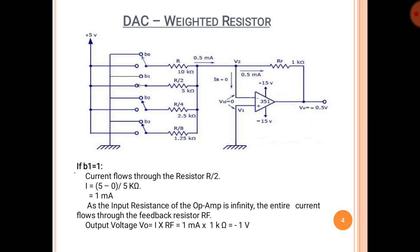Next case: if B1 = 1, the current flows through the R/2 resistance (5kΩ). The current is calculated as (5 − 0) / 5kΩ = 1mA. As the input resistance of the op-amp is infinity, the entire current flows through the feedback resistor RF. The output voltage V0 = 1mA × 1kΩ = −1V when B1 = 1.